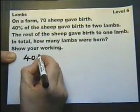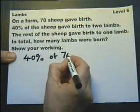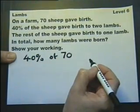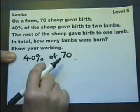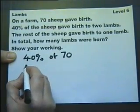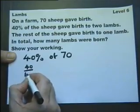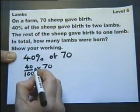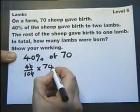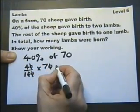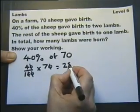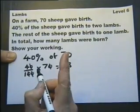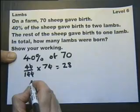So 40% of the 70 sheep gave birth to two lambs. So we'd better work out this to start with. Let's do this as a fraction. So we can cancel with those two noughts there. And then with these two noughts here. And left with 28. So there were 28 sheep that gave birth to two lambs.